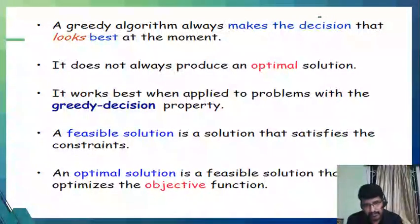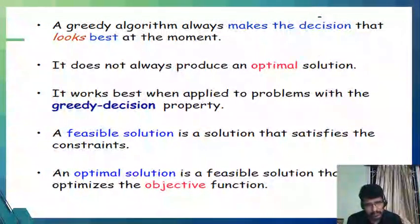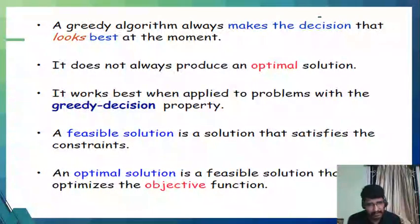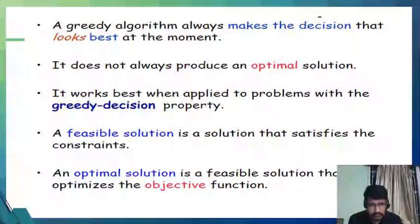The feasible solution and optimal solution are used interchangeably in exploring greedy problems. A feasible solution is a solution that satisfies the problem constraints, whereas an optimal solution is a feasible solution that optimizes the objective function. Greedy algorithms are utilized in optimization problems where we need to choose the optimal solution among many feasible solutions available for the problem.